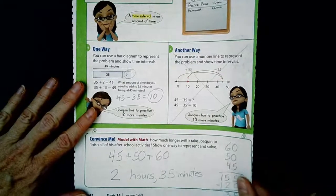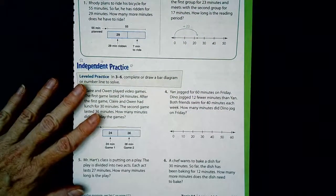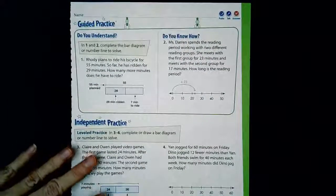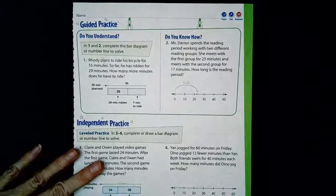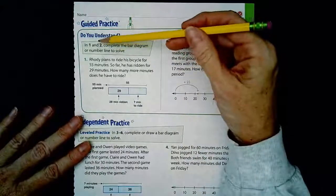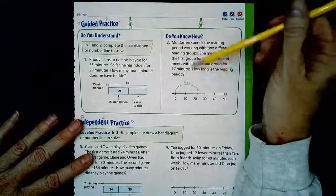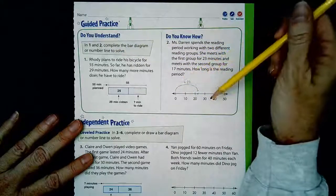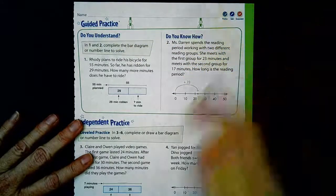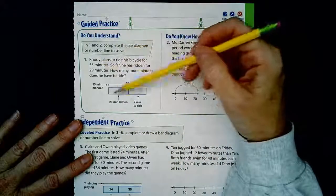Let's move on to page 543. Remember you can always pause this video anytime you need to catch up or watch something again. For numbers 1 and 2 they want us to use the bar diagram or number line. We'll use the number line this one time, but after this we're not using it for number 1.